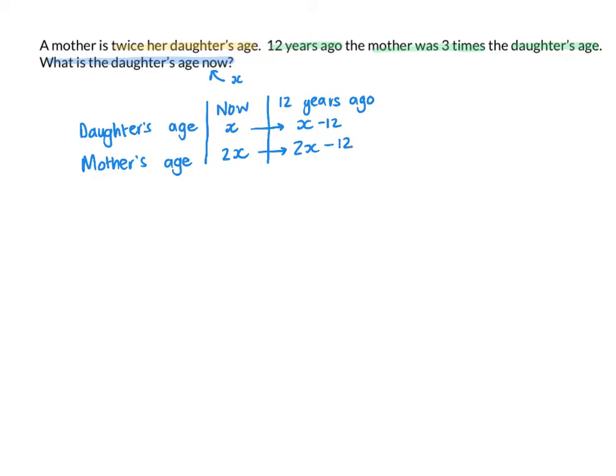Next, we need to look at what else they told me, because I want to set up an equation to find out how old the daughter is. It says that the mother is three times the daughter's age. So I'm going to use that information now — three times the daughter's age twelve years ago.